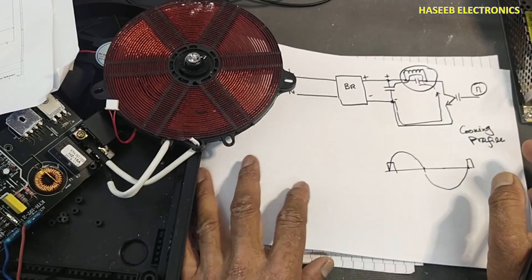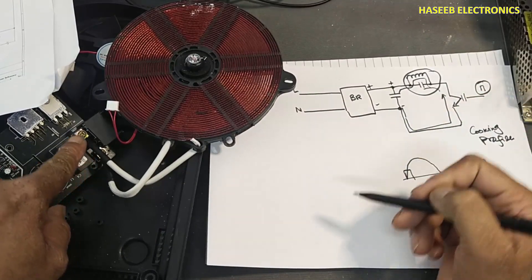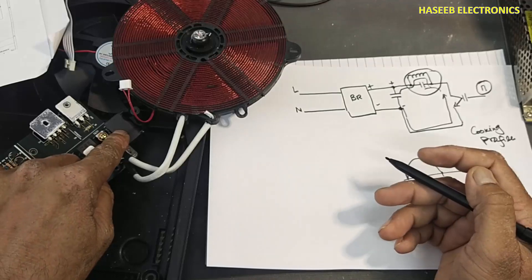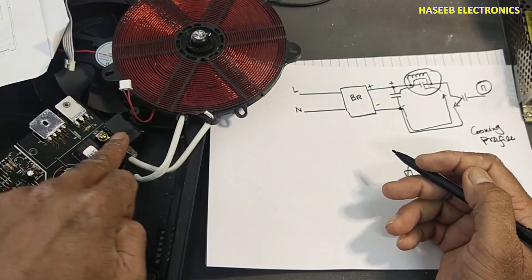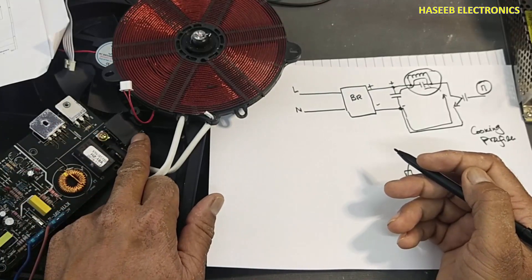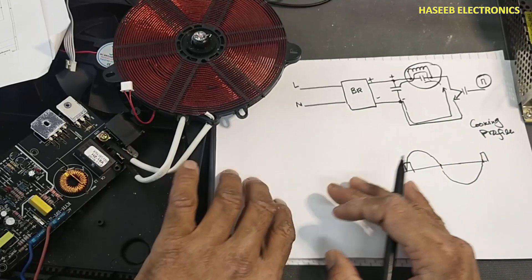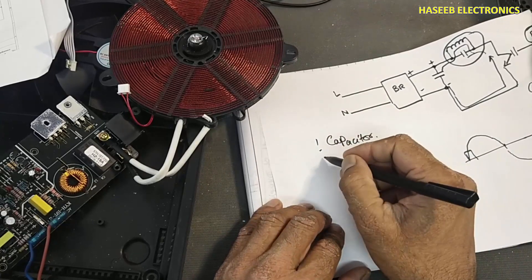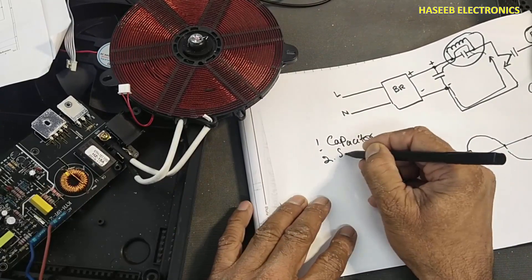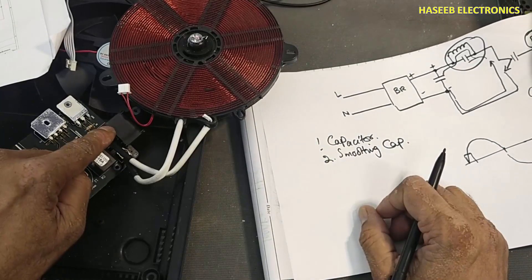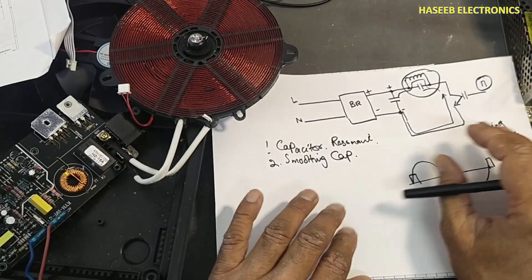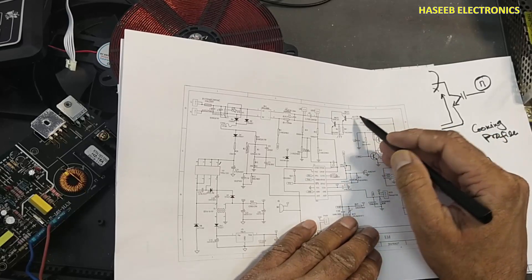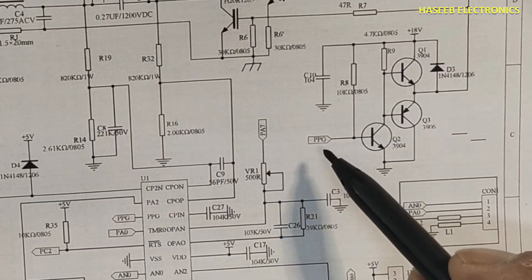Now, the reasons. The biggest issue in this network is the capacitor, because capacitors are the most common failure component in electronics. So number one is our resonant capacitor, number two is the smoothing capacitor, and number three is the problem in the gate driving network transistors.